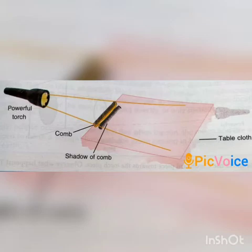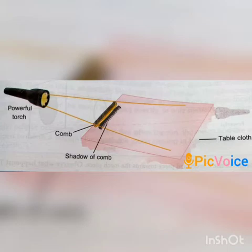When light gets blocked by an opaque object, a shadow is formed. This is because light cannot bend around obstacles — it always travels along a straight path. If it cannot bend around obstacles, the shadow will be formed whenever an obstacle is in the path of the light.